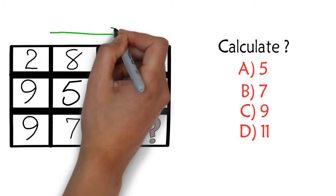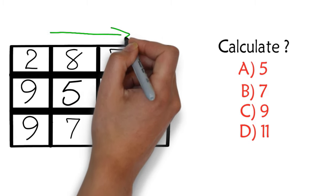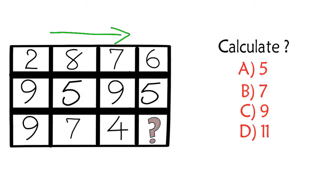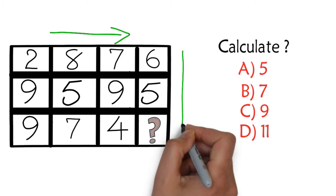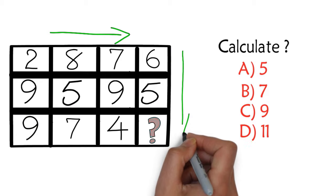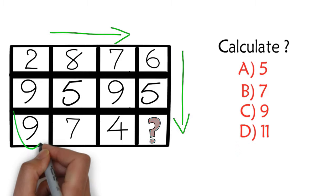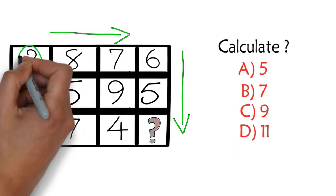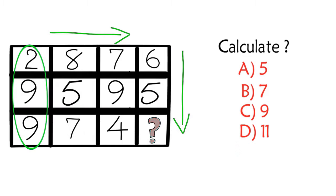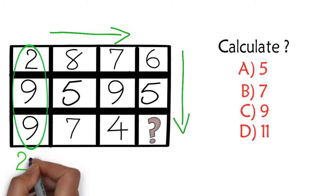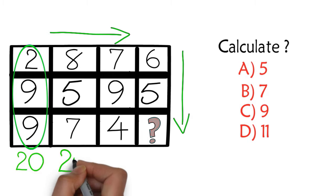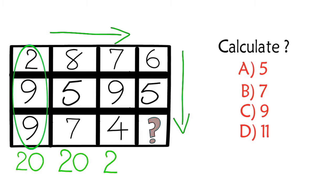The key to solving this problem is to determine the pattern, which can either be in the rows or in the columns. In this particular case, let's check the columns first. Each column adds up to the value of 20: for example, 2 plus 9 plus 9 is 20, 8 plus 5 plus 7 is 20, and 7 plus 9 plus 4 is also 20.